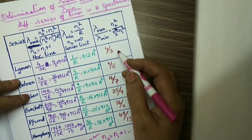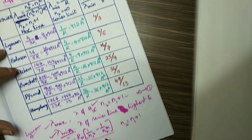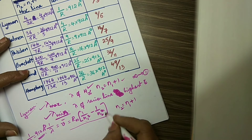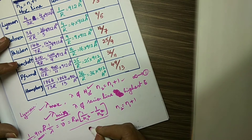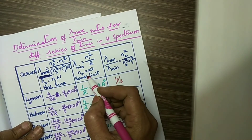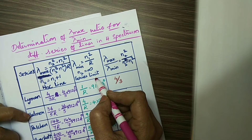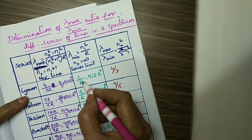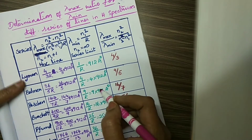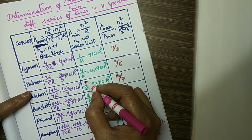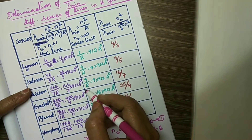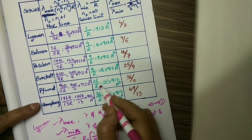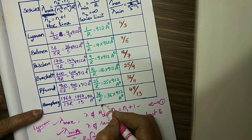Lambda minimum: for getting lambda minimum, N2 is equal to infinity, so that factor becomes zero, giving N1 squared by R — this is the series limit wavelength. For Lyman series, it is 1/R which equals 912 angstrom units. For Balmer, 4/R (4 into 912). For Paschen, 9/R. Brackett, 16/R. Pfund, 25/R. And Humphreys, 36/R.